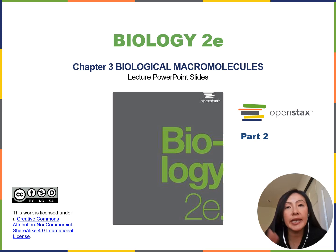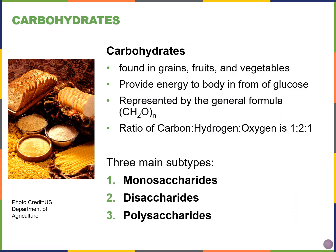Welcome back. In the second video we're going to be looking at the first macromolecule type: carbohydrates. When you think of carbs or carbohydrates, things like bread, pasta, cake, and fruit like apples, pears, grapes, and strawberries come to mind. We find carbohydrates in grains, fruits, and vegetables — they give us energy through glucose.